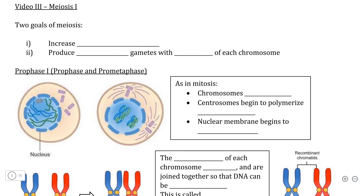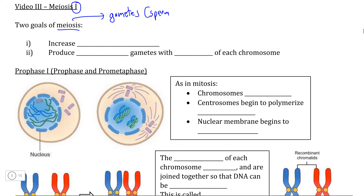In this video we're going to look at the events that occur in the first half of meiosis, which is what we call meiosis 1. As we go through the details it's important to consider what the ultimate goal of meiosis is, which is of course to produce functional gametes — which if you are biologically male would be your sperm, and if you are biologically female would be your eggs.